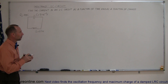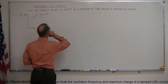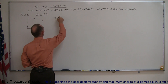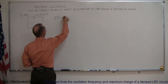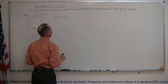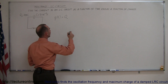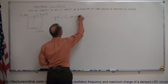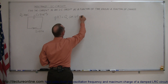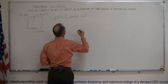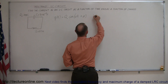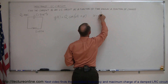In the previous example, I showed that the charge on the capacitor as a function of time is equal to the total charge placed on the capacitor, which we'll call Q-sub-naught, times the cosine of omega T plus a phase angle. We can put in the phase angle if we like. Now, omega in this case was equal to 1 over the square root of L times C.